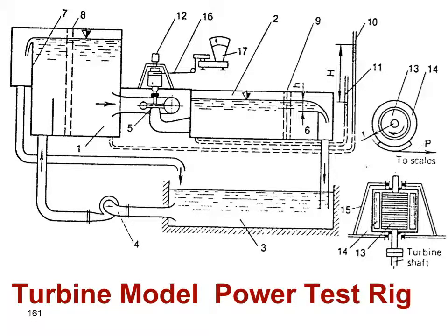In a turbine lab, a test rig is used to subject a model to cavitation. Through a closed circuit water system, a pump takes water from a lower tank to an upper tank, then to the turbine, then downstream to another tank and back to the lower tank.